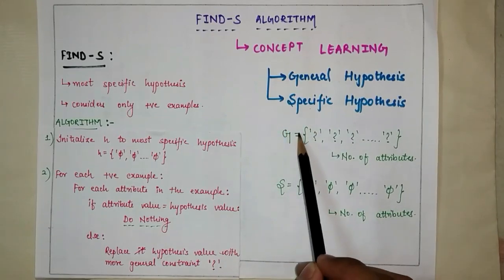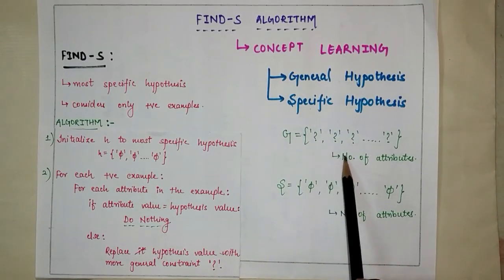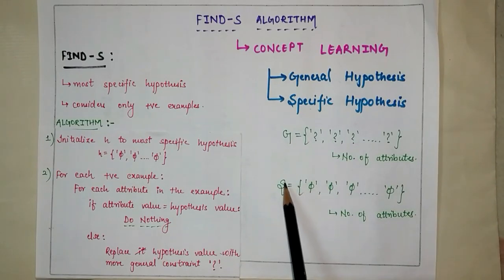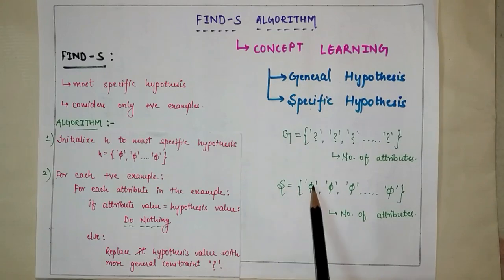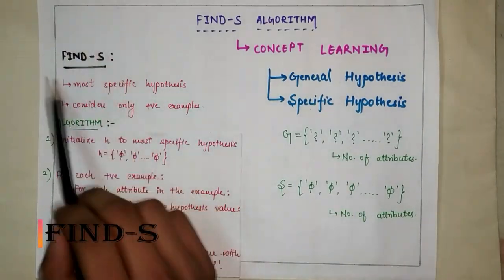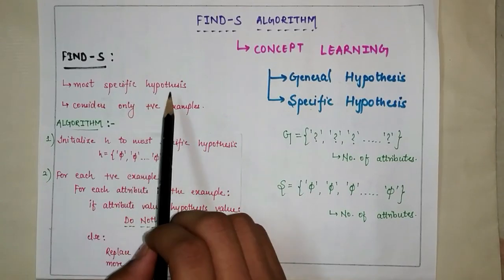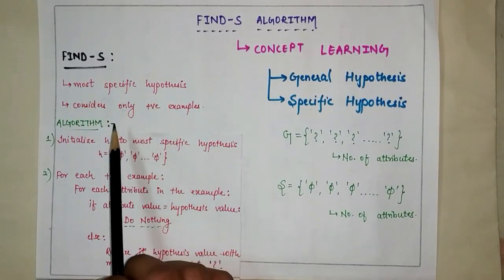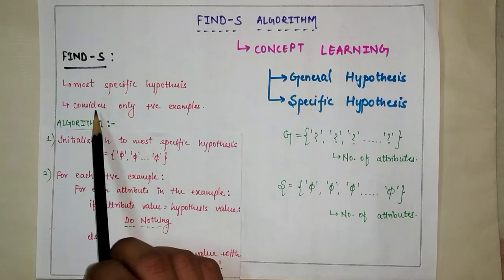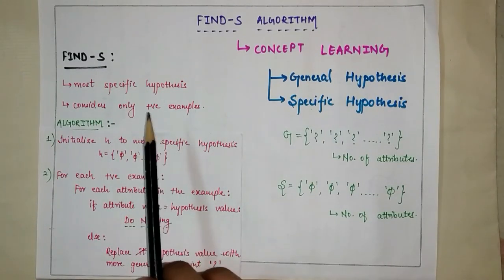The general hypothesis can be represented by a question mark, and the number of question marks depends on the number of attributes. Similarly, the specific hypothesis is represented by phi (φ), and the number of phis also depends on the number of attributes. Now, the Find-S Algorithm finds the most specific hypothesis and considers only the positive examples — it eliminates all negative examples.